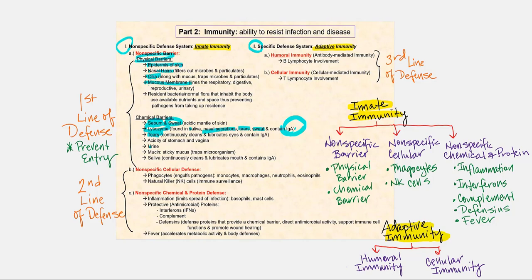Increased tear production helps flush out whatever has made contact with the surface of our eye. The stomach and vagina are acidic, which will prevent the growth of certain microorganisms and keep existing microorganisms at bay. When we urinate, that flushes out our urinary tract. Mucin, produced by goblet cells, combines with water to produce mucus, which is quite sticky — acting like flypaper to trap microorganisms. Salivary glands are continuously producing saliva, which helps clean and lubricate our mouth.